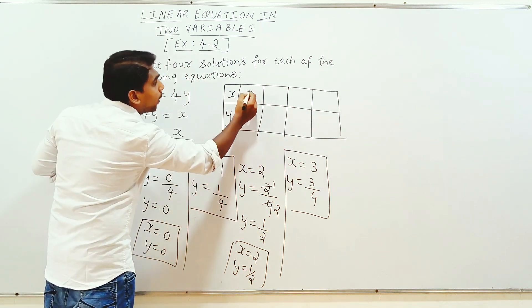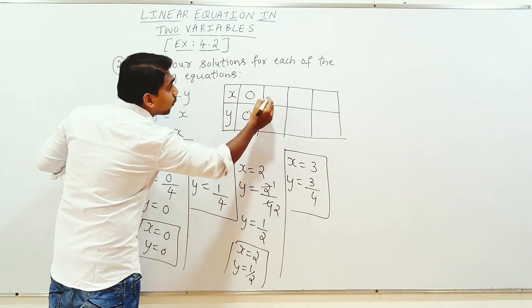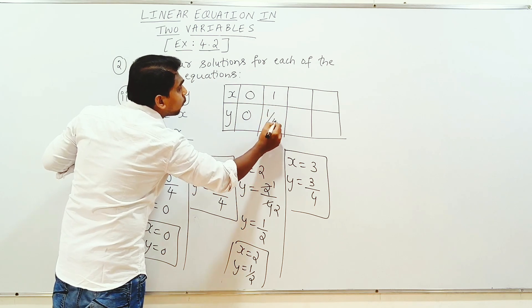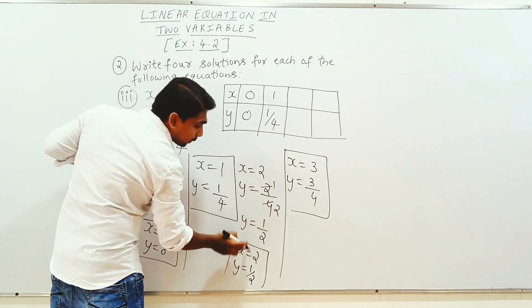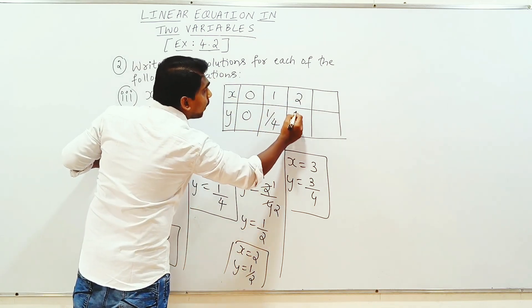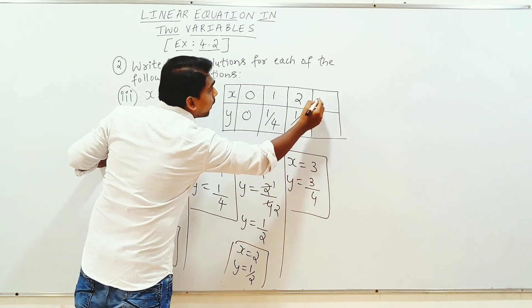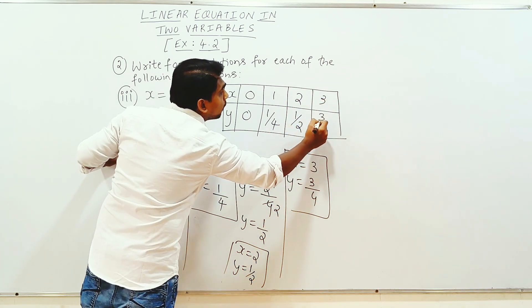This is x and y. x equals 0, y equals 0. x equals 1, y equals 1 by 4. When x equals 2, y equals 1 by 2. When x equals 3, y equals 3 by 4.